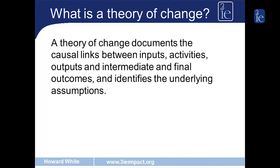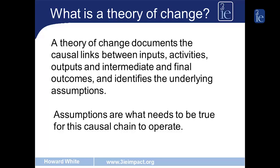So what is a theory of change? A theory of change documents the links between inputs, activities, outputs, intermediate and then final outcomes, and identifies the assumptions underlying that causal chain. These assumptions are the things that need to be in place in order for the links in the causal chain to operate.